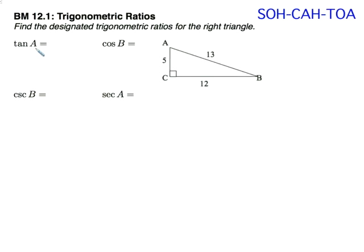So our first question asks us to find the tangent of angle A. So here's angle A, and the opposite side is 12. The adjacent side is 5. Tangent is opposite and adjacent, so our ratio will be 12 over 5.